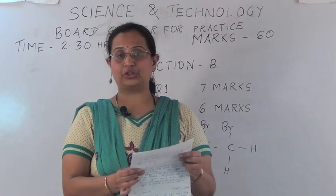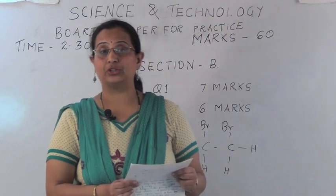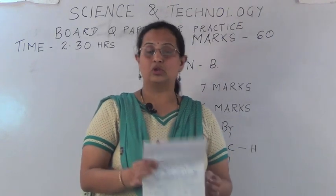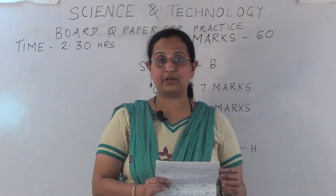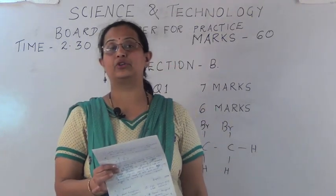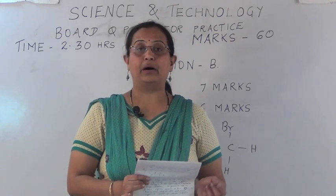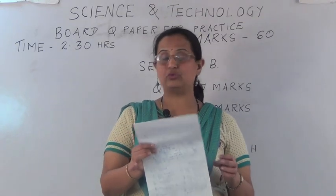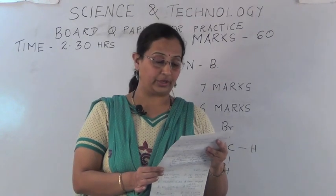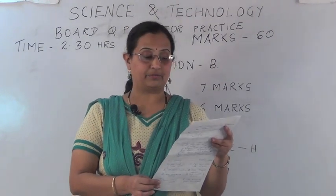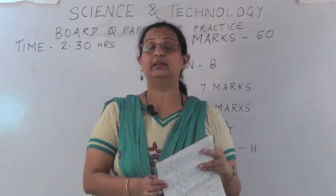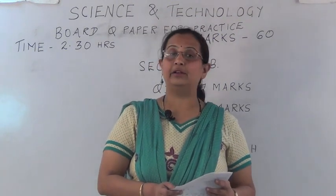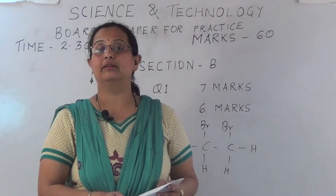The last question of question 2: explain the reaction of calcium with water. The balanced equation carries one mark and the explanation carries one mark. The reaction is: Ca + 2H₂O → Ca(OH)₂ + H₂↑. Explanation: calcium reacts with water less vigorously to form calcium hydroxide and hydrogen gas. Calcium starts floating because bubbles of hydrogen gas released stick to the surface of the metal. You can also underline the names of reactants and products in the explanation.